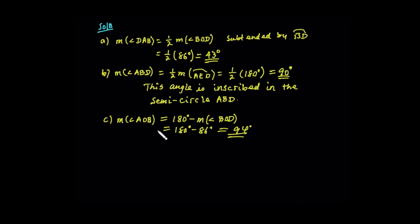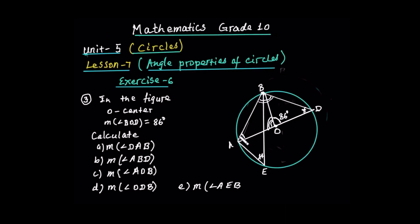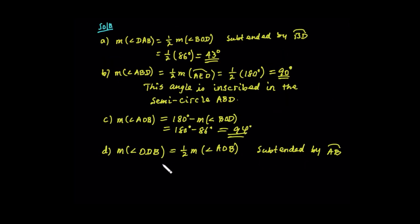The measure of angle AOB equals 94 degrees, which corresponds to arc AB. The measure of angle ODB is equal to half of the measure of angle AOB, because these two angles are subtended by the same arc AB. Angle AOB is the central angle and angle ODB is the inscribed angle. So this becomes half of 94 degrees, and this becomes 47 degrees.